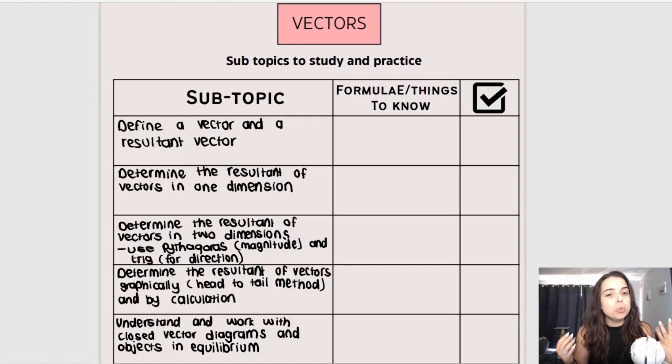You also need to determine the resultant of vectors in two dimensions. There you use Pythagoras and in order to determine the direction, you need to get an angle, you use trigonometry, you use tan theta. We can give you several vectors and ask you to determine the resultant vector. So this does get a little bit more complicated.